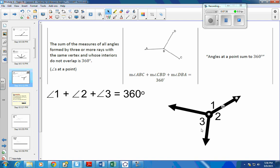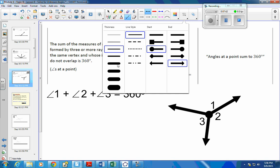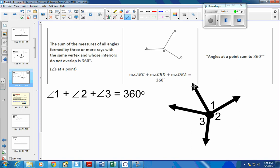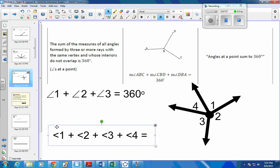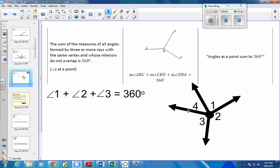And it doesn't matter that I have three. I could put in a fourth one here. Let me grab a fourth one. I'll put a fourth one out here. And that just means that angle 1 plus angle 2 plus angle 3 plus angle 4 would be 360 degrees. Okay? So all of the angles around a point, if you go the whole way around, should give you 360 degrees.